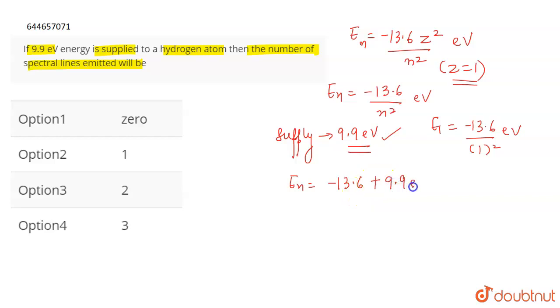If you supply 9.9 electron volt, this is the ground state energy of hydrogen, and you are supplying 9.9 electron volt. So this means the energy is going to be equal to minus 3.7 electron volt.